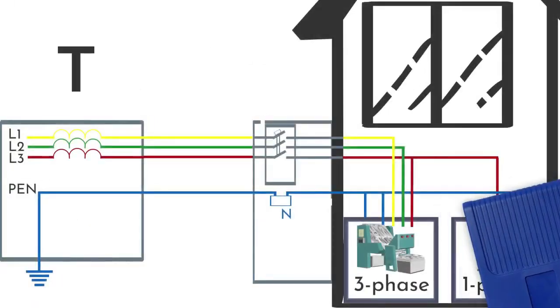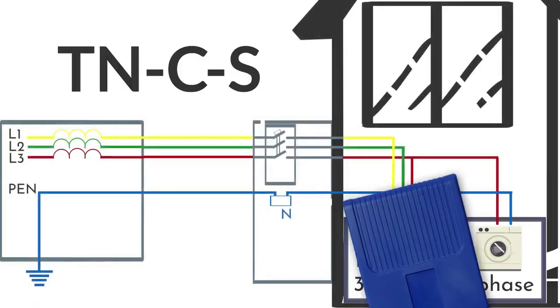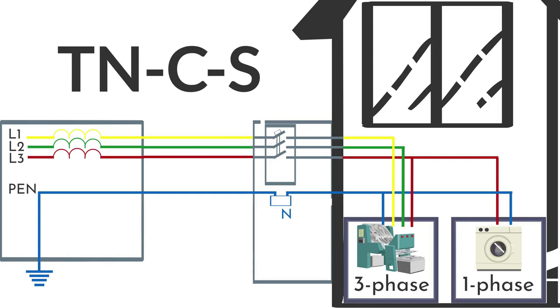Now let's talk about the TN-CS grounding system. At the moment, it is a very common power supply system. Just like in the previous case, its neutral conductor is solidly grounded in the transformer substation. The PEN conductor in the input device is divided into zero working and zero protective conductors. Furthermore, the PE bus is grounded once again.